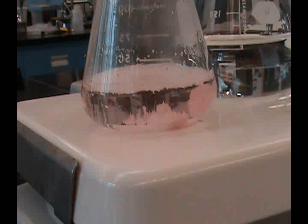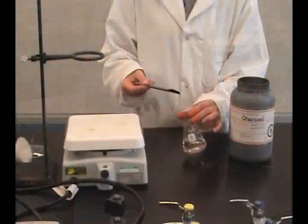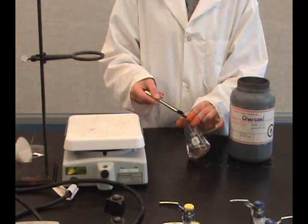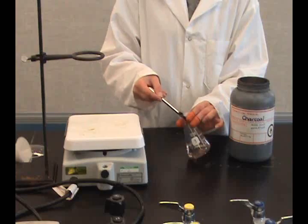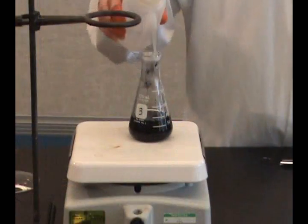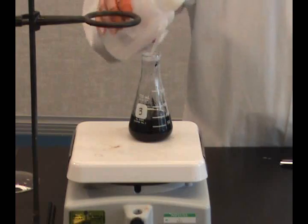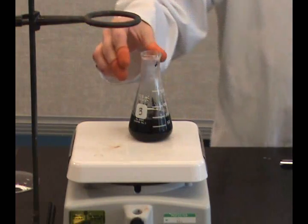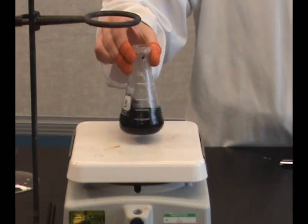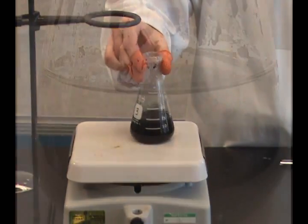After dissolving the sample, there may be color that needs to be removed. This can be done by adding some activated charcoal when the solution is below the boiling point, so the solution does not boil over. Swirl and allow the charcoal to remove the color and settle.